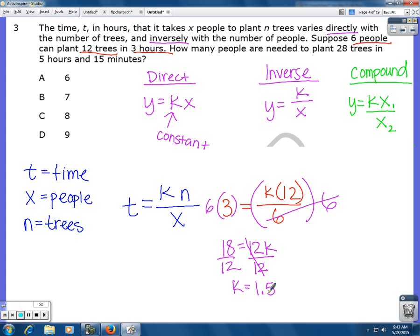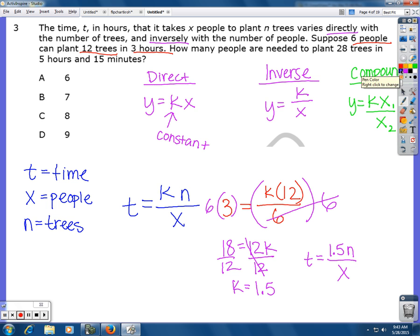Now I'm going to rewrite my equation using k, because now I just solved for k, so I know what that is. So my new equation is this right here. Then I'm going to go back up and I'm going to look at the information it tells me for the next part. So how many people, so that's what we're going to be looking for. How many people are needed to plant 28 trees in 5 hours and 15 minutes?